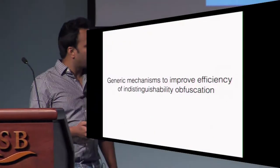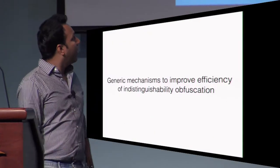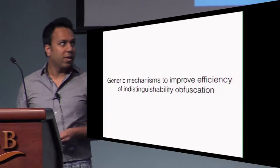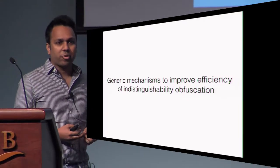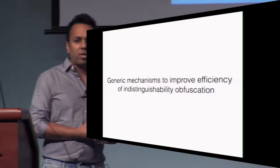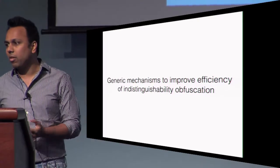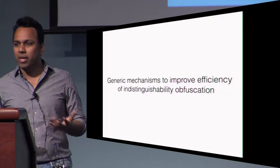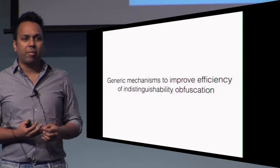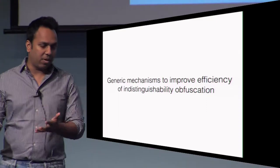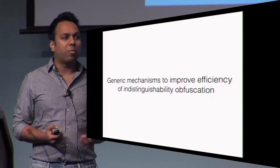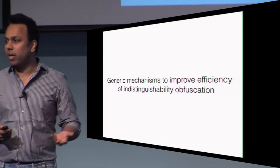So, let me start with the broad goal for this talk. We are interested in developing generic mechanisms to improve the efficiency of indistinguishability obfuscation, and this is basically motivated by the fact that by now we have a lot of theoretical applications of I.O., and the efficiency of all of those applications basically depend upon the efficiency of I.O., and therefore it motivates the goal of improving the efficiency of I.O. in a generic manner.